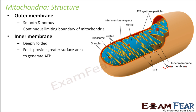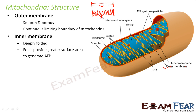The inner membrane, shown here in yellow, is deeply folded. These folds provide a greater surface area to generate ATP. If you have a wire and keep it straight, only a limited area is available. But if you fold the same wire, you can accommodate almost three times the length in the same space — your surface area increases. Similarly, the inner membrane is folded so that surface area increases and more ATP molecules can be produced.